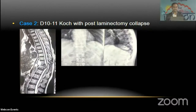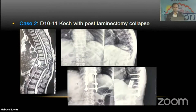Here is another case of D10-11 cox spondylodiscitis which presented with paraparesis and collapse after laminectomy done alone. In such cases, anterior reconstruction and instrumented fusion is required.